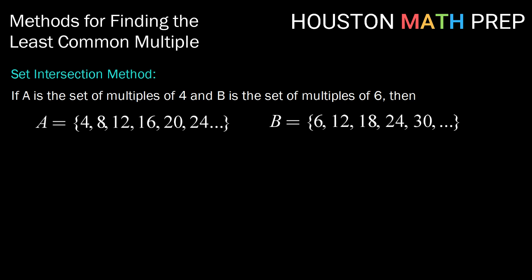And B, which is our multiples of 6, would be 6, 12, 18, 24, and so on. We can define C as the set of all the common multiples. Then C would be A intersect B, which would be, at least to start, 12, then 24, and so on.